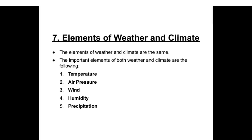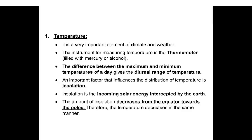The elements of weather and climate are the same: temperature, air pressure, wind, humidity, and precipitation. Temperature is measured by a thermometer filled with mercury or alcohol; the difference between maximum and minimum temperatures gives the diurnal range of temperature. An important factor influencing temperature distribution is insolation — the incoming solar energy intercepted by the earth. The amount of insolation decreases from the equator towards the poles; therefore temperature decreases in the same manner.